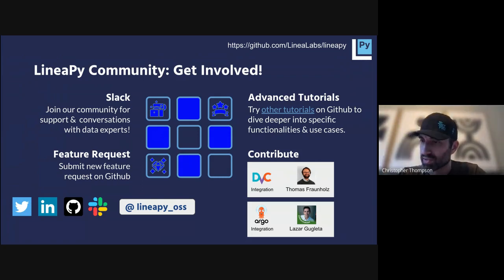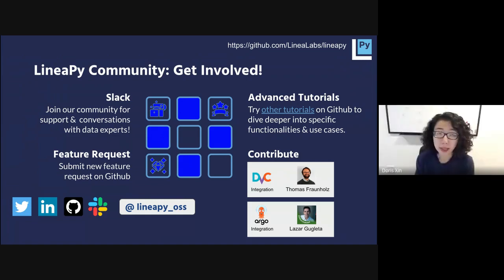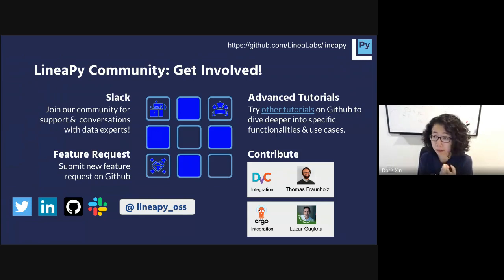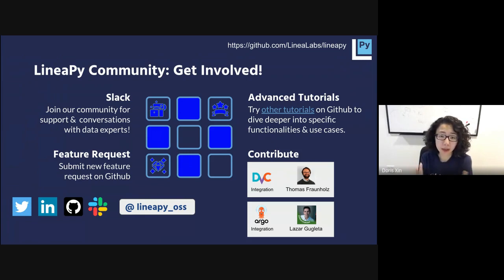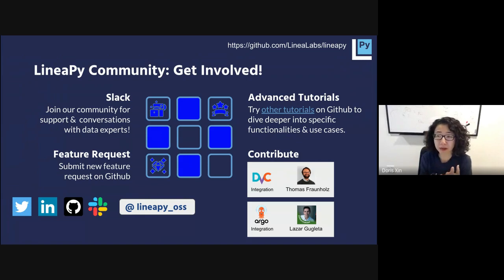What databases are supported as a backend for storing components? The backend has two storage pieces: a relational database and a blob store. For the relational database, SQLite and Postgres are things we've tested, but pretty much any relational database — you just configure it in the LineaPy environment file and we'd be able to start talking to it. For file storage, S3 is integrated, as well as GCS and local file storage. Pretty much every single file storage we've tried has worked, so it's a very flexible way of setting things up that can be tailored towards your needs.